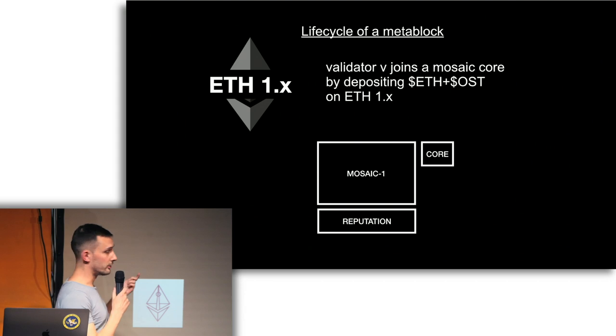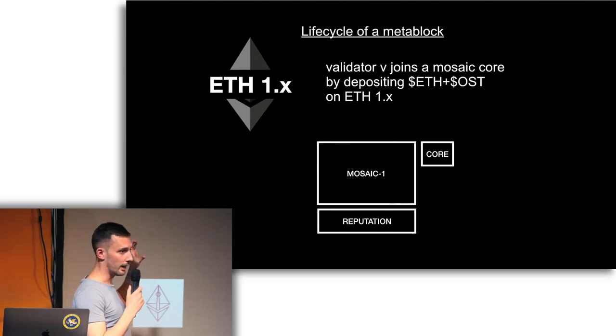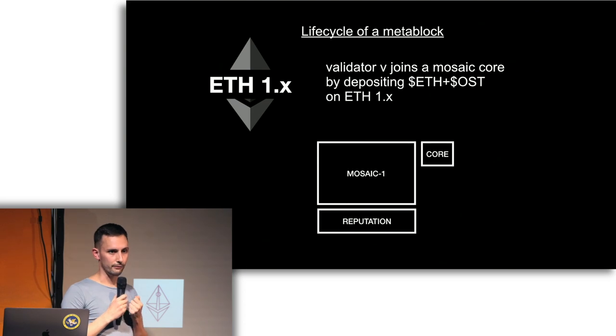How is this different from Plasma? Plasma is based on fraud proofs — you can only do certain state transitions within Plasma, and if any invalid transition would happen on the Plasma chain, you need to report the fraud proof on Ethereum and then people can exit. Here, it's a traditional consensus engine. I call this a meta block and a meta blockchain because the idea is really just re-implementing a consensus engine at layer two. The finalization of a block is a Byzantine vote of the validators on Ethereum.